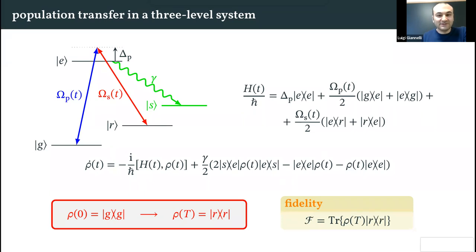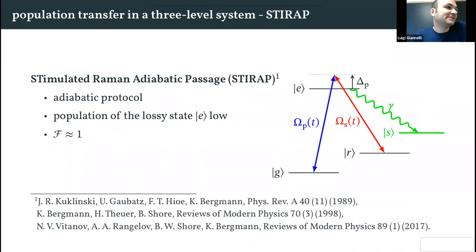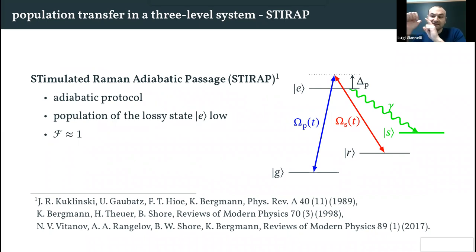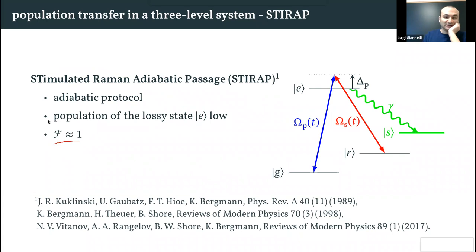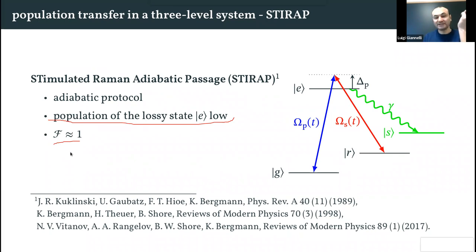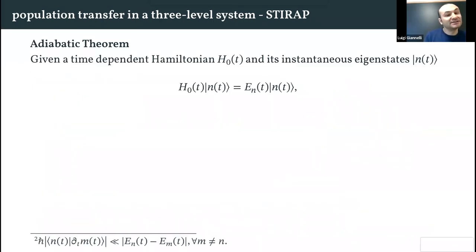Now I will introduce STIRAP, which is a protocol that does this population transfer. STIRAP is an adiabatic protocol that allows for population transfer from g to r with fidelity close to one. During this evolution the population of the excited state is kept low, which is why not so much population is lost and high fidelity can be reached. To explain this protocol I will first introduce the adiabatic theorem.